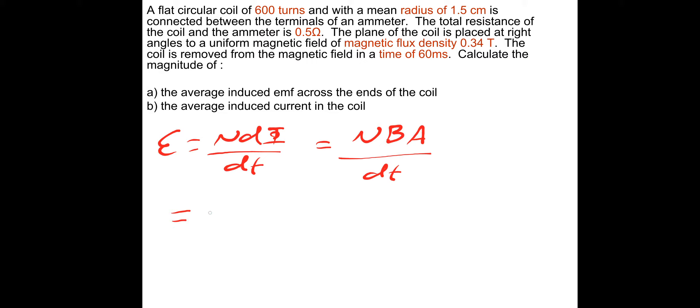So N, the number of turns, is 600, multiplied by magnetic flux density 0.34 tesla, multiplied by the area. Now the area is, obviously it's a circle, so it's πr², so π times the radius 0.015 squared, and then divide by the time of 60 milliseconds, so 60 times 10 to the minus 3. And if you calculate that, that gives an EMF of 2.4 volts. Hopefully that one went okay.